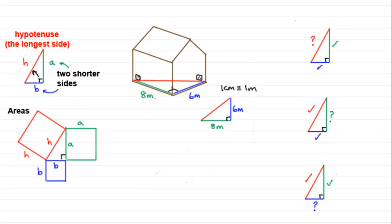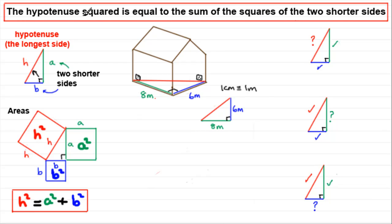Pythagoras drew squares on the sides of the triangle and discovered a connection between their areas. He found that the area of this square on the longest side was equal to this area plus this area. The area of a square is given by multiplying the two sides together, so the area of the square on the hypotenuse would be H squared, and this is equal to the areas of these two squares added together: A squared plus B squared. Or as an equation: H² = A² + B². We can summarize this by saying that the hypotenuse squared is equal to the sum of the squares of the two shorter sides. And so we have Pythagoras' theorem.